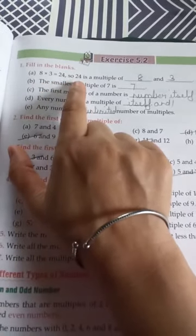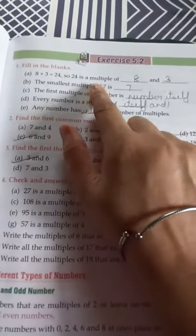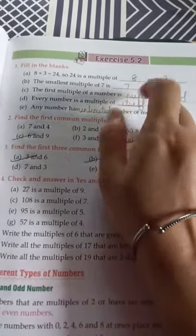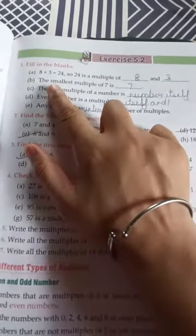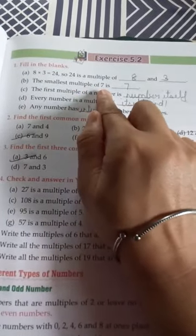8 into 3 is equal to 24. So 24 is the multiple of dash and dash. So 24 is a multiple of 8 and 3. The smallest multiple of 7 is 7.